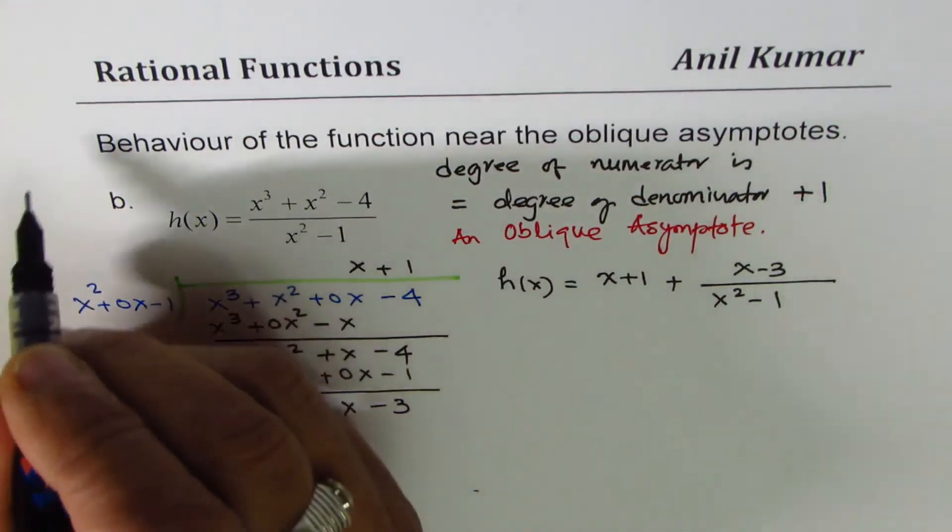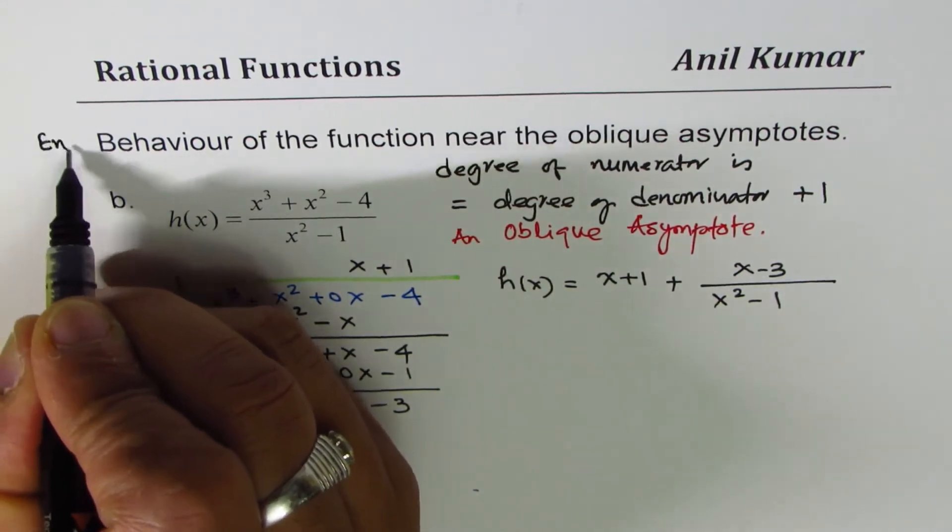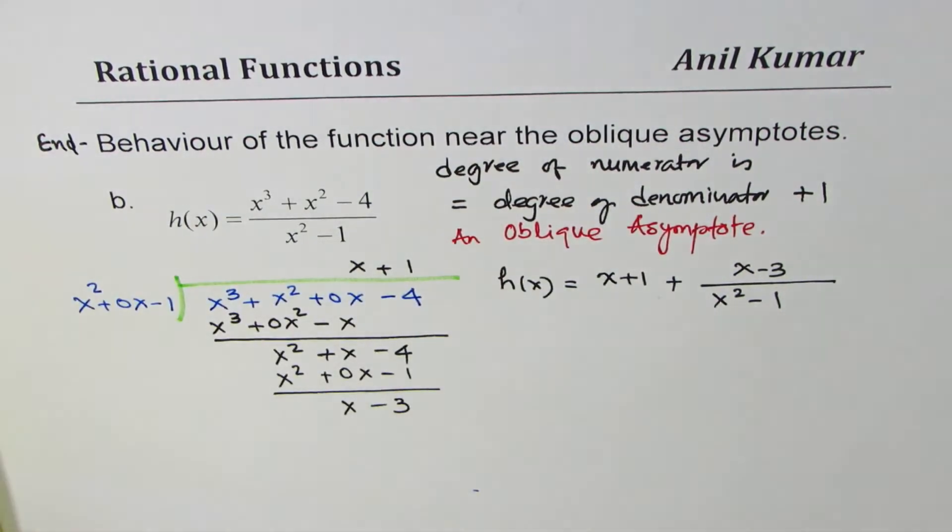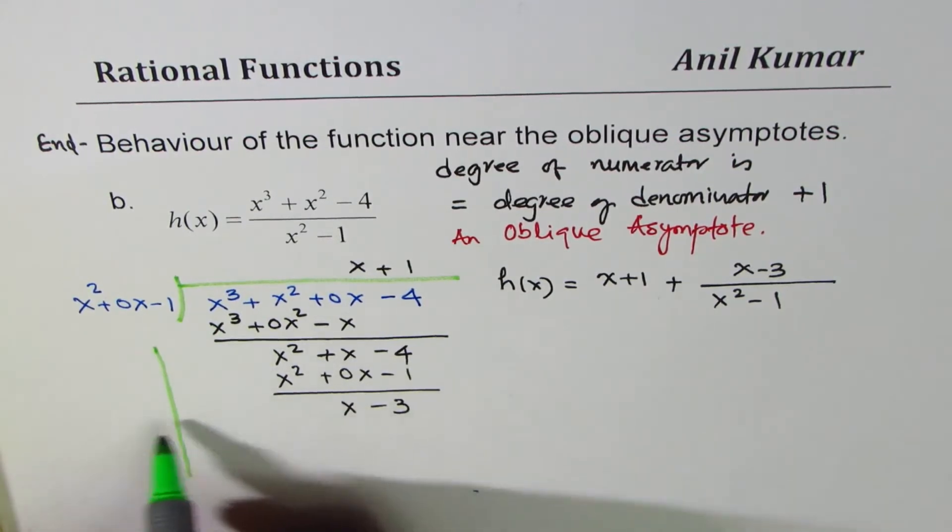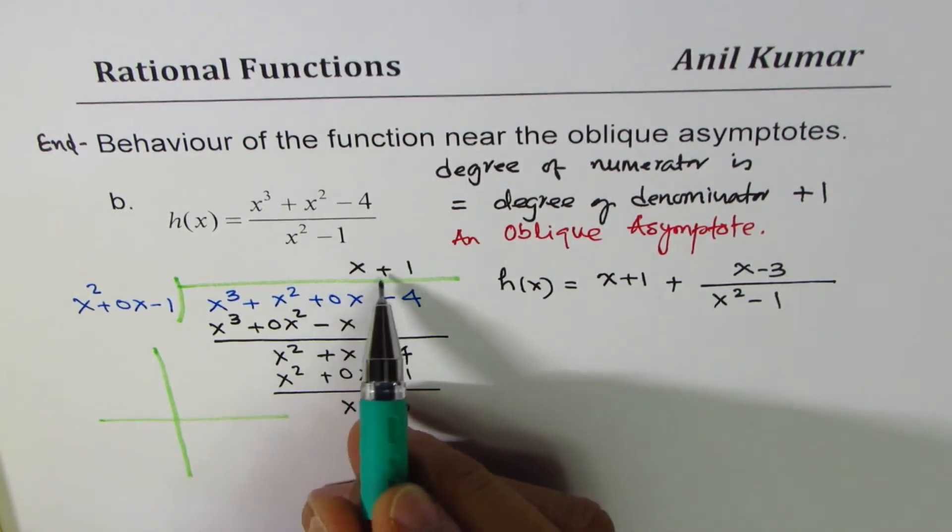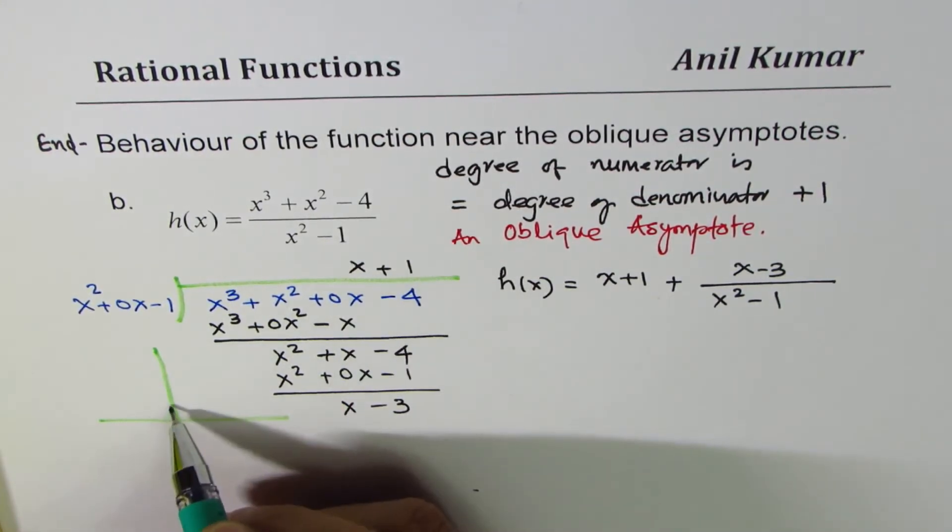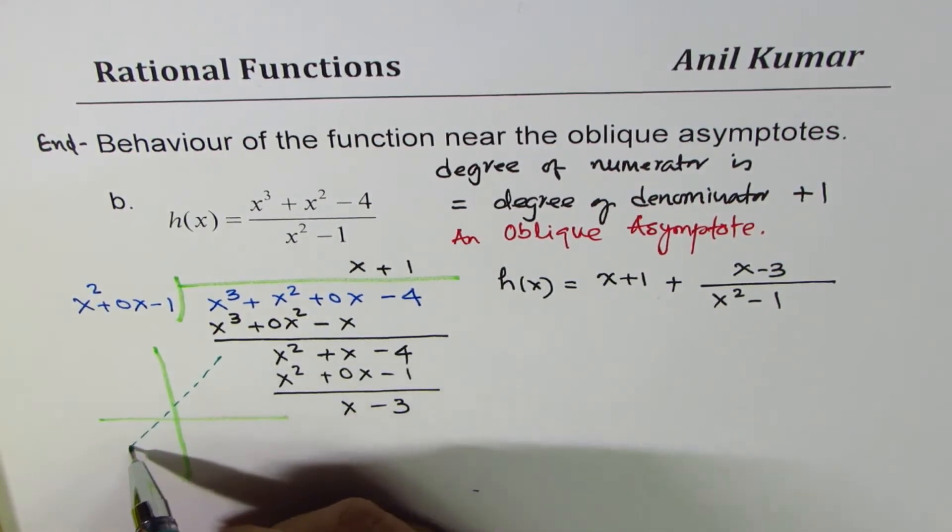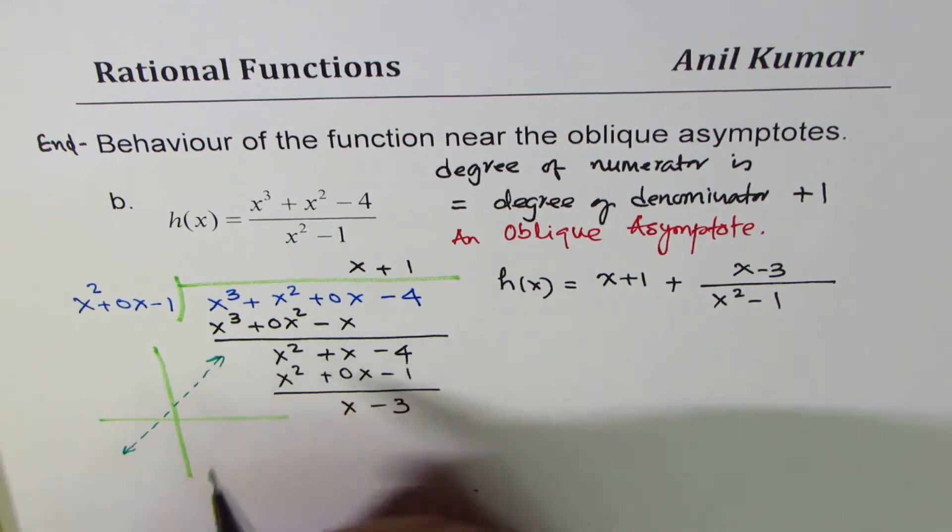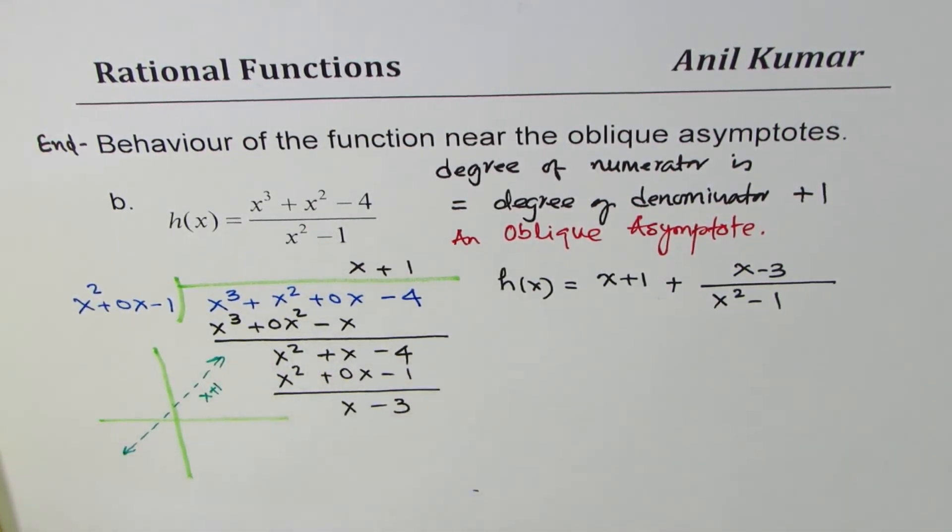When we say end behavior, we have an oblique asymptote. Let me also sketch this oblique asymptote. It is just an approximate sketch for us. We are only concerned about the oblique asymptote. x plus 1 is the equation. If 1 is the y-intercept, this is my oblique asymptote.